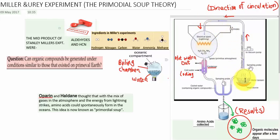This is the oceanic compartment and this is the condition just like the primitive atmosphere which contains ammonia, methane, and water. They sent an electric discharge or electric spark to the chamber to generate a condition just like lightning. With the help of a condenser, hot water goes out and cool water enters.